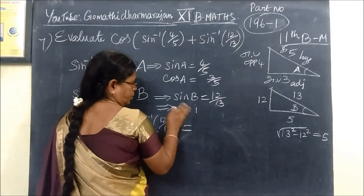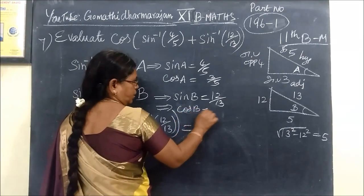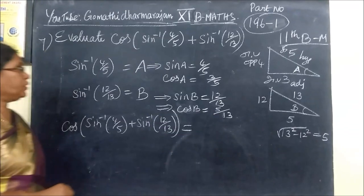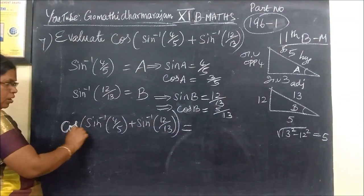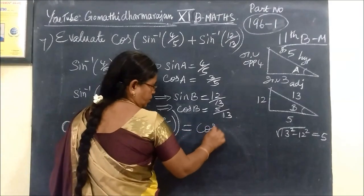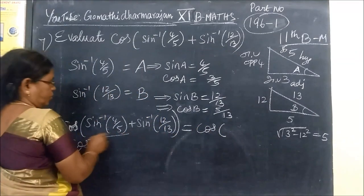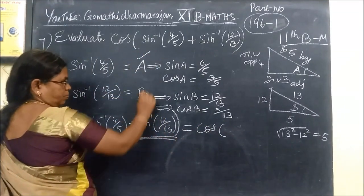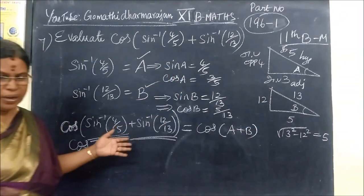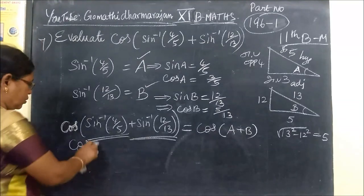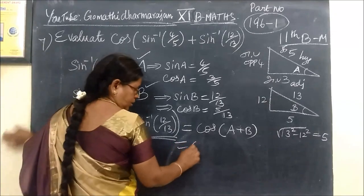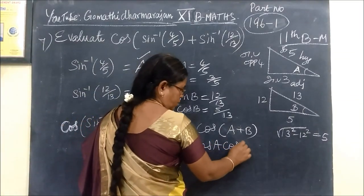Sin A equals cos. Cos B equals cos, adjacent side by hypotenuse. Cos of this, if we return this account, cos of A plus B will be written.